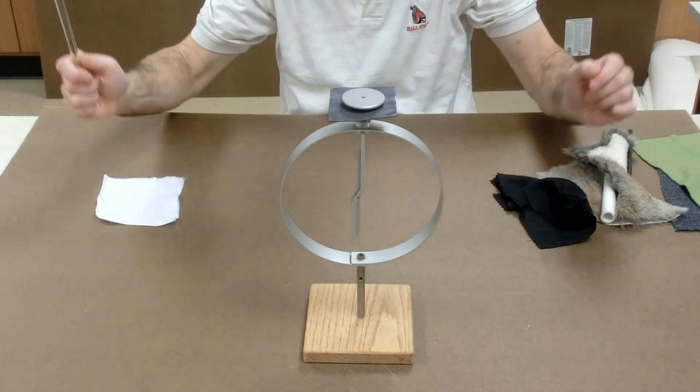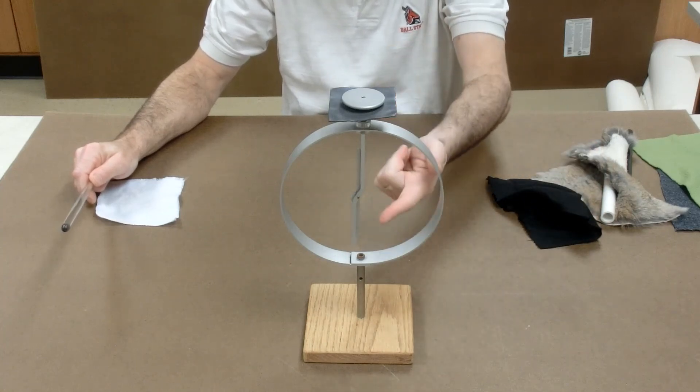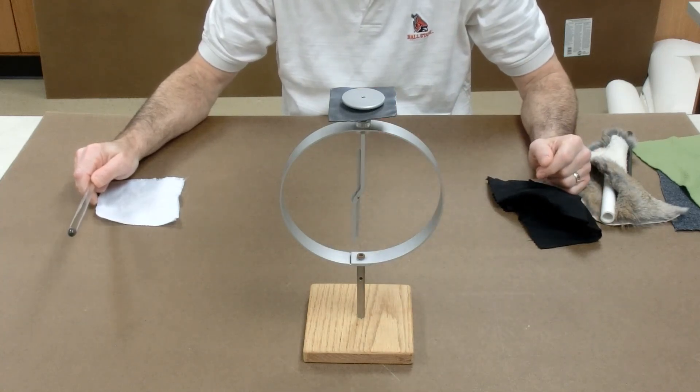When you pull your finger and the rod away at the same time, the needle would deflect because the shaft and the needle are both negatively charged.